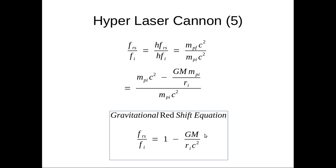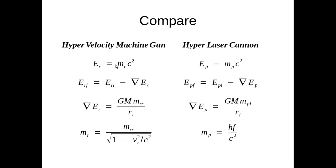Let's do a comparison with the hyper velocity machine gun. We have Er equals mr c squared, Ep equals mp c squared. So really the difference is we have the mass of the hypervelocity round and here we have the mass of the photon. Then we have the final energies equal initial energy minus the change in energy - same thing except for photons.